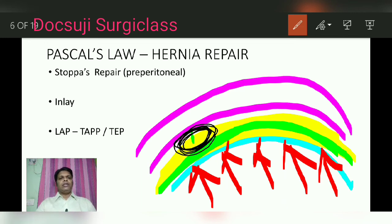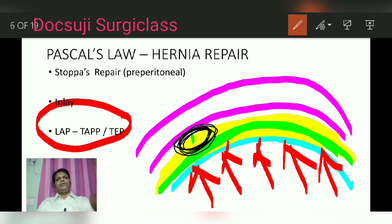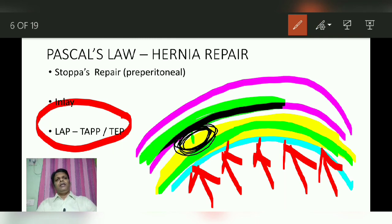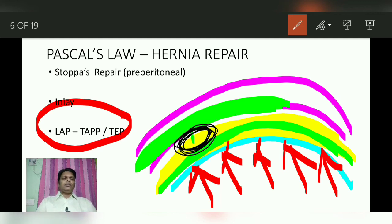Stoppa repair is an open method where you keep the mesh in the preperitoneal space. The same principle is used in laparoscopic hernia surgeries: trans-abdominal preperitoneal (TAPP) repair and totally extraperitoneal (TEP) repair. The other options — Lichtenstein mesh repair, Bassini repair, and Darning repair — place the mesh anterior to the defect, which is why they are ruled out according to Pascal's law.